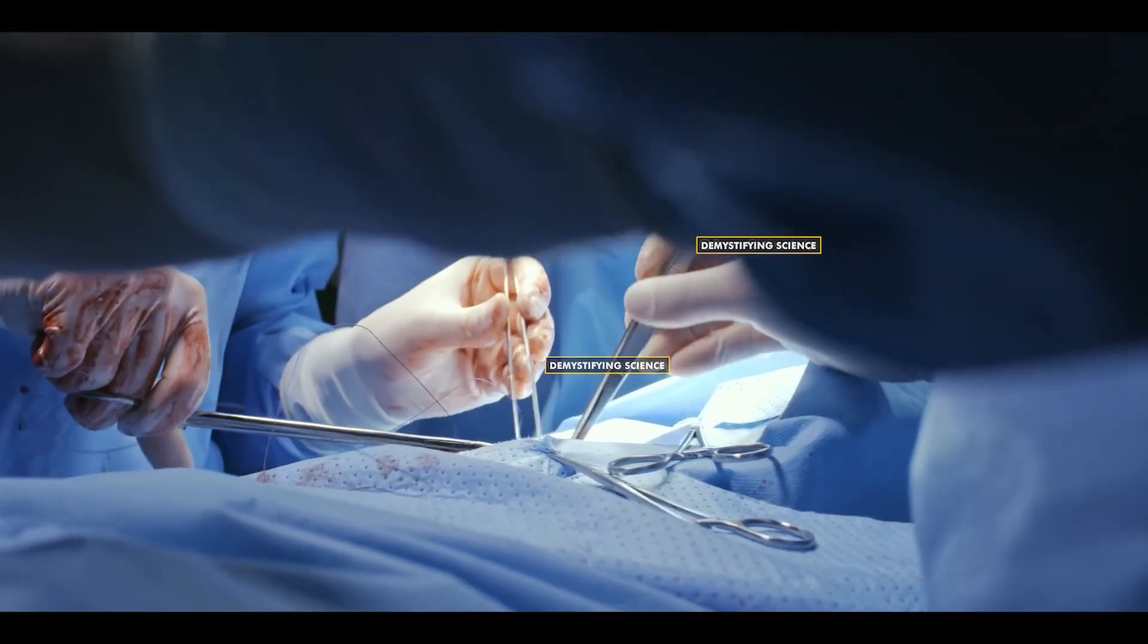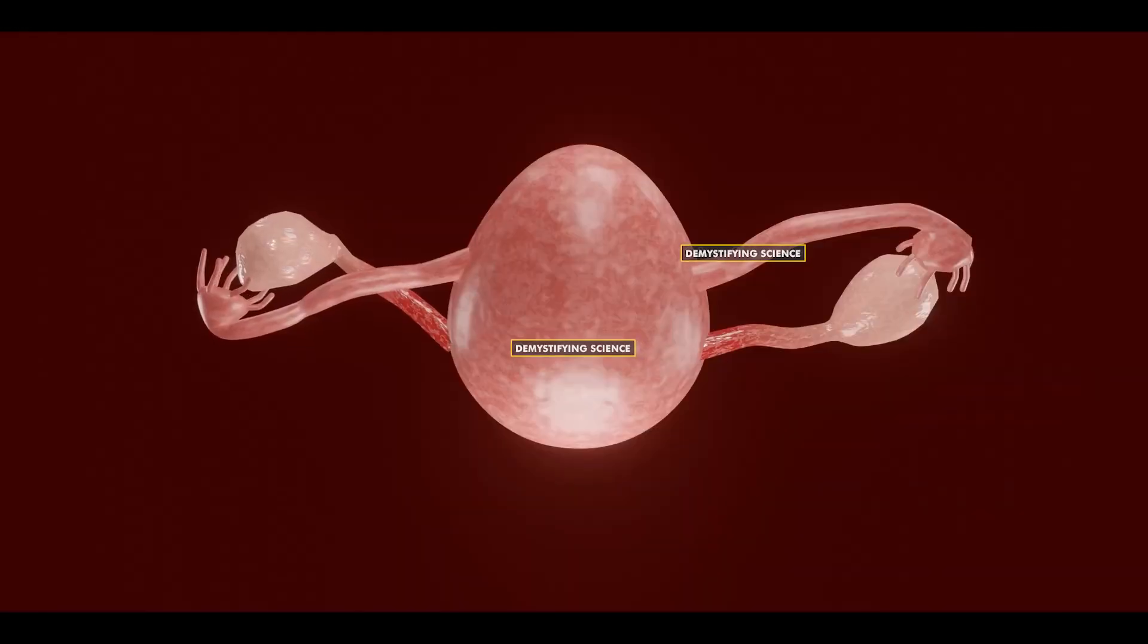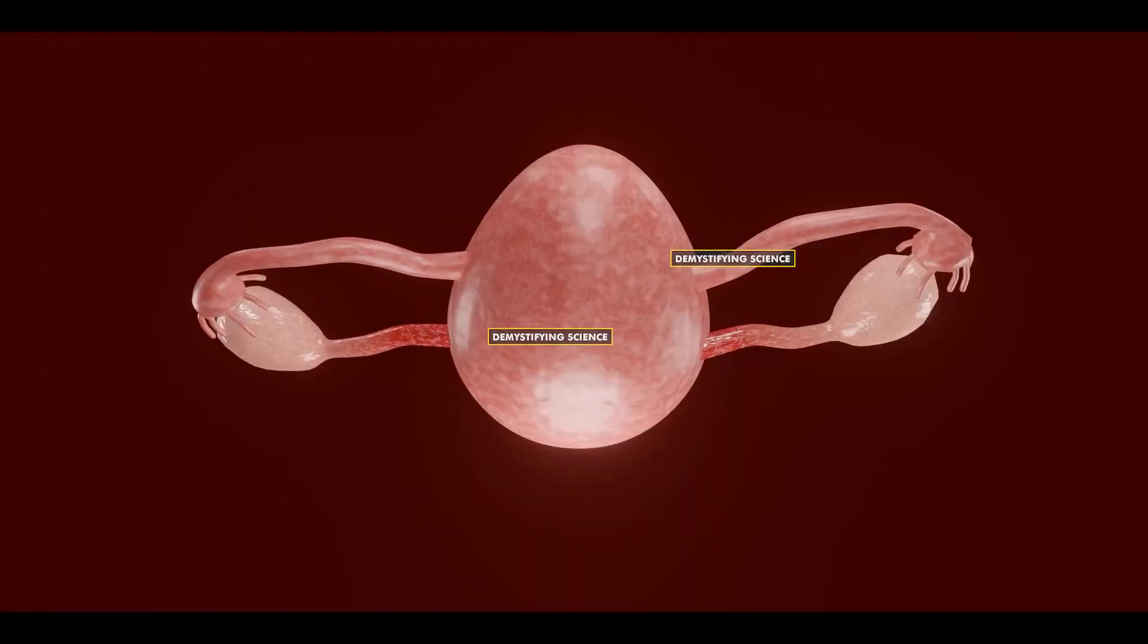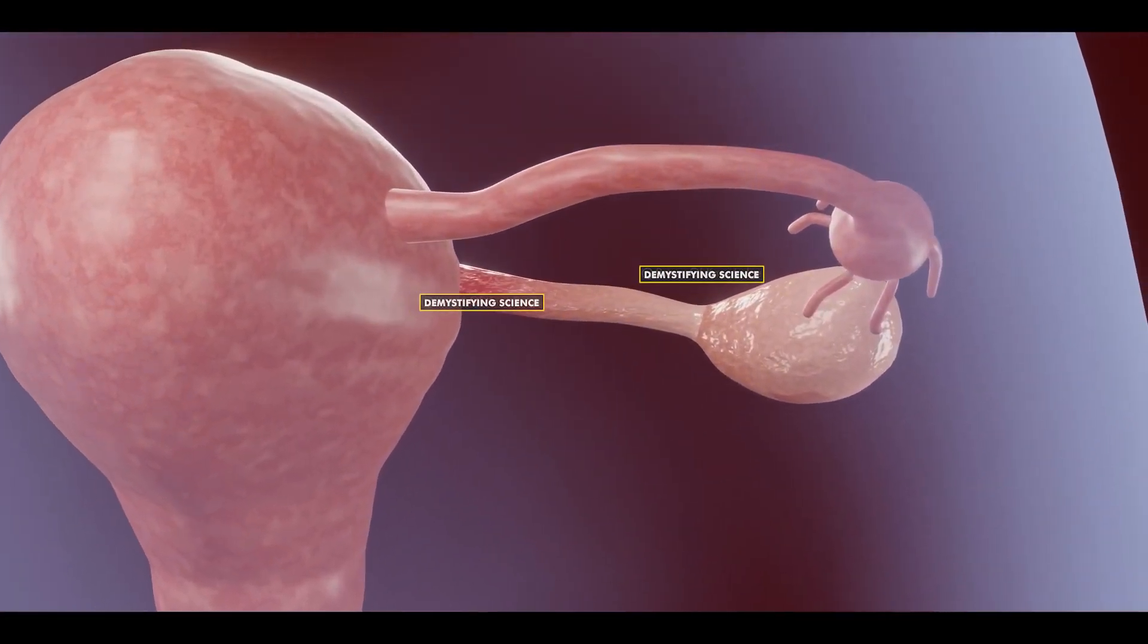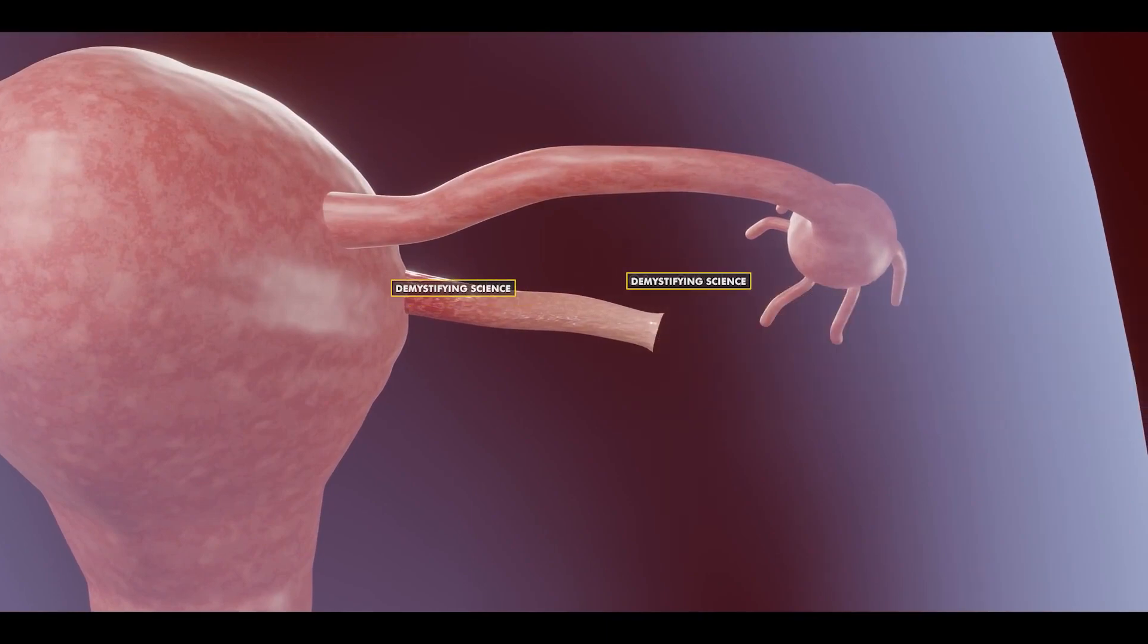Surgery is the preferred treatment for ovarian torsion. During the procedure, the twisted ovary is untwisted, and if the ovarian tissues have died, they may need to be removed, and in some cases, the fallopian tubes as well.